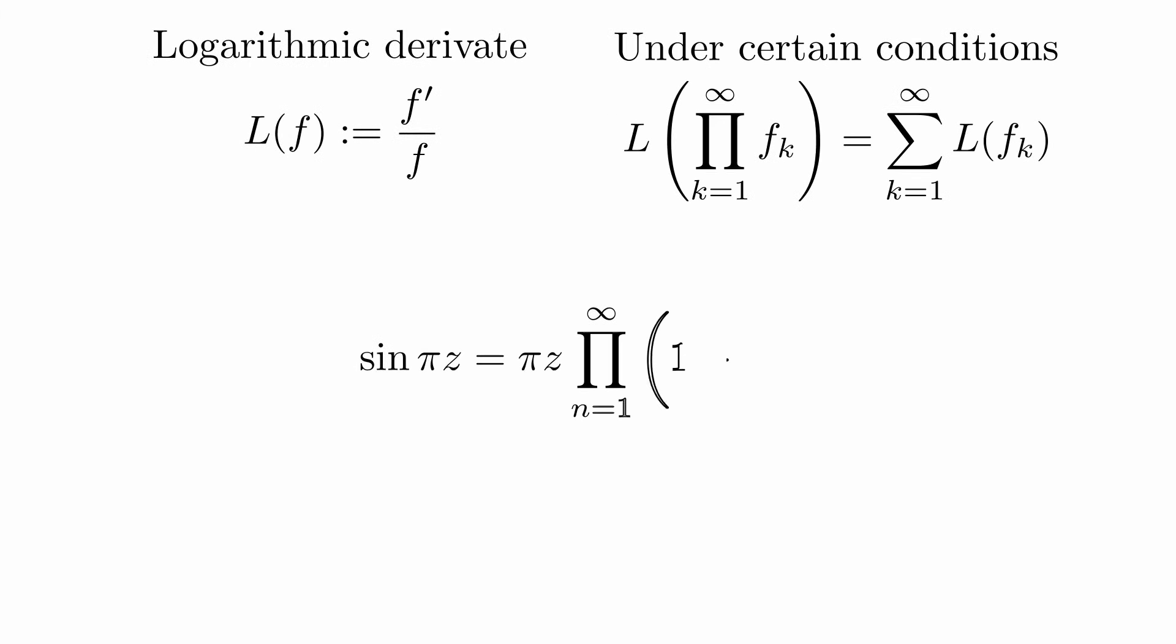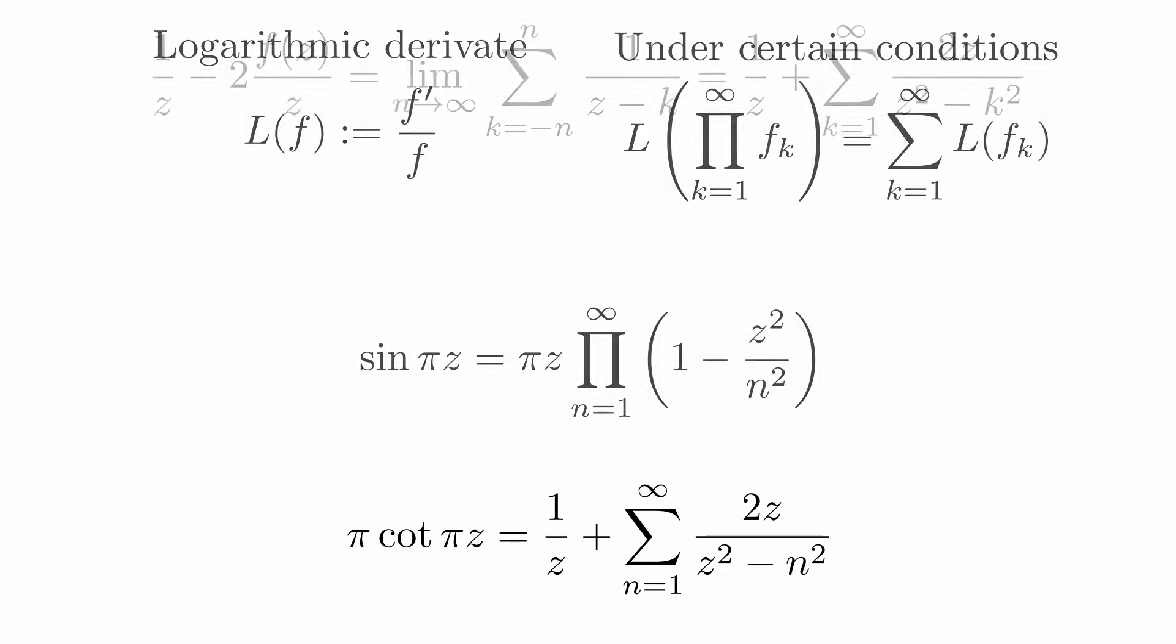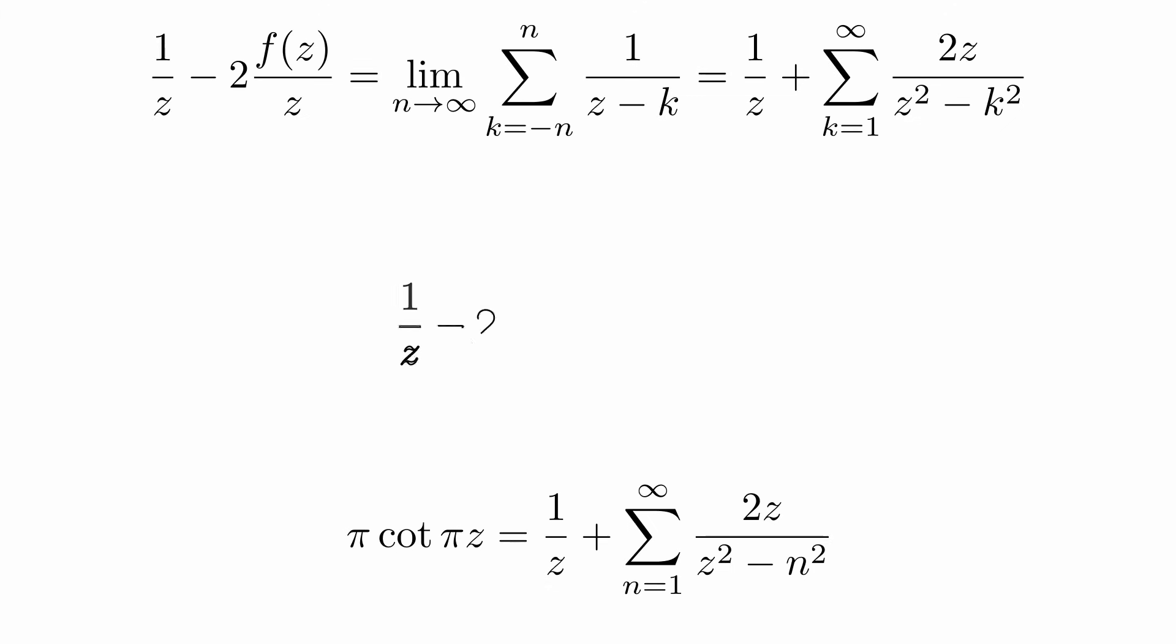Given the infinite product expansion of the sine, we can on both sides apply the logarithmic derivative. On the left side, we get the cotangent. And on the other side, an infinite sum. This is exactly the expression we already had for our generating function.